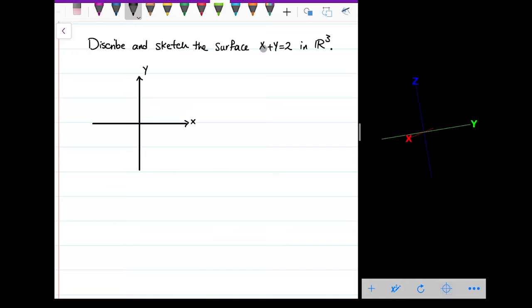I'm gonna plug in 0 for x and then y would be 2. So when x is 0, I'm gonna plug it into the equation and y is 2. So the point (0, 2) is in here. So 0, 1, 2.